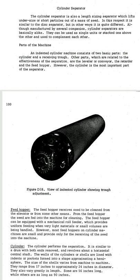This figure shows a view of an indented cylinder showing trough adjustment. The first part of the machine is the feed hopper. The feed hopper receives seed to be cleaned from the elevator or from some other source. From the feed hopper, the seeds are fed into the machine for cleaning. The feed hopper can be equipped with a mechanical rod feeder which provides uniform feeding when very light materials or small volumes are being handled. Most feed hoppers on cylinder machines are small and provide only for receiving the seed into the machine.